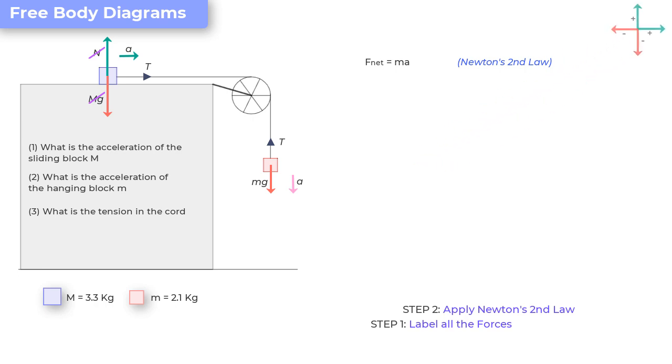So, for the small mass, we have tension T acting in the upward direction. And since it is in the upward direction, we would say it is positive. And we also have the force mg acting in the downward direction and therefore we'll take it as negative. So, it's minus mg.